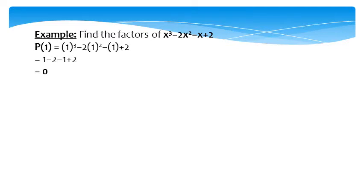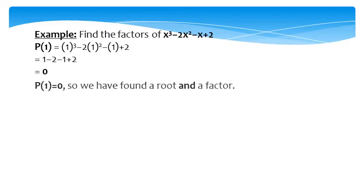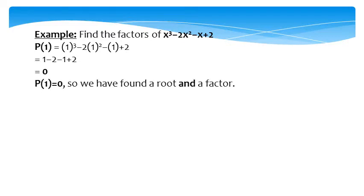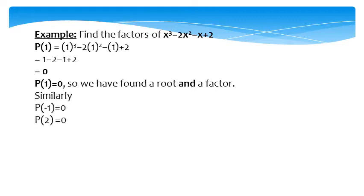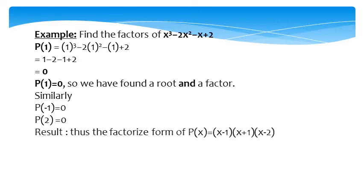Putting a value of 1, the result is zero, so we have found a root and a factor. Similarly, putting a value of minus 1, the result is zero. After putting a value of 2, the result is also zero. Thus, the factorized form of p(x) equals (x minus 1)(x plus 1)(x minus 2).